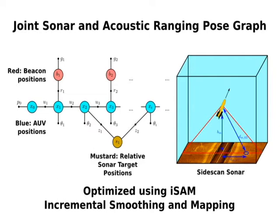Having completed the first survey pattern, the AEV heads southwards to carry out a second survey pattern. However, at this location, an artificial sonar target has been placed.